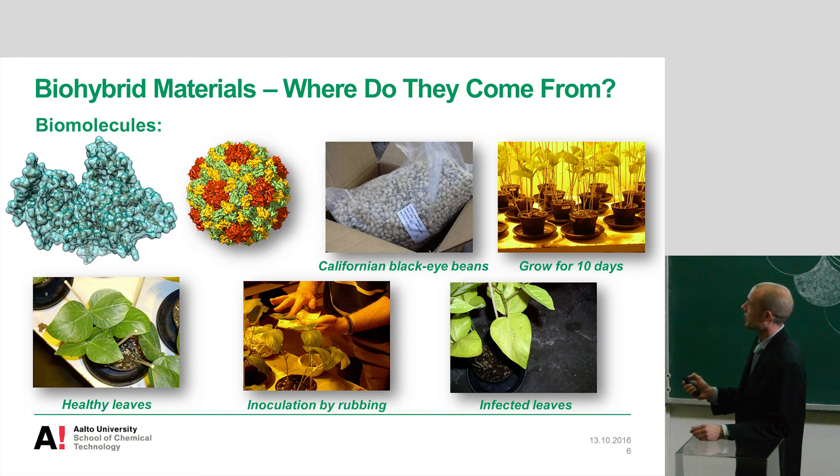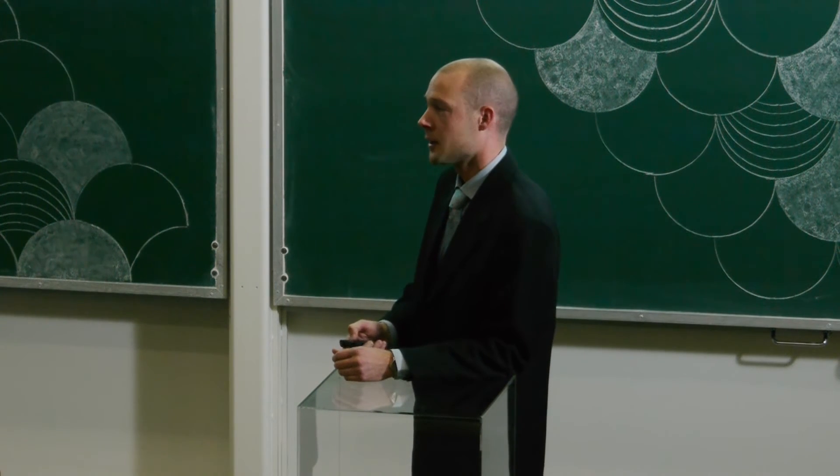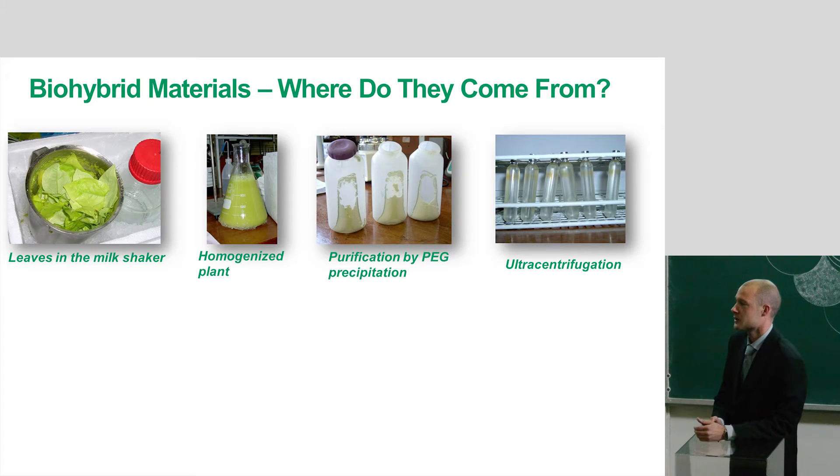And these can then be infected with virus stock, let the infection spread for a week, and then the plants can be harvested. So then you need a milkshaker, you put all the leaves in there, you make a homogeneity out of it, and then with a series of centrifugations and precipitations, one can actually isolate all the particles.